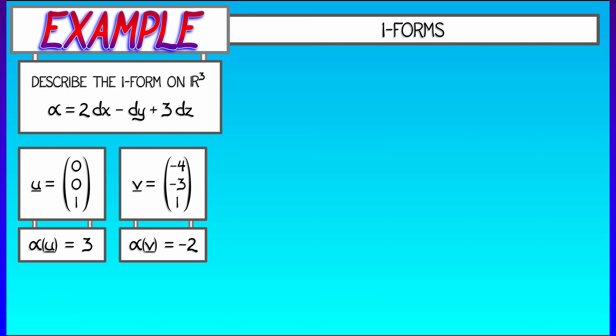If I change the vector that I input to alpha, I may get a different output. But it does so in a linear fashion. So if I feed it the vector w, that is (4, 3, -1), that is it's minus v, then alpha of w is going to be minus alpha of v. Instead of getting negative 2, we get positive 2.